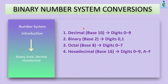Before we start, let me introduce you to the four number systems. First is decimal — its base is 10 and digits are from 0 to 9. Second is binary — its base is 2 and digits are 0 and 1. Third is octal — its base is 8 and digits are from 0 to 7. Fourth is hexadecimal — its base is 16 and digits are from 0 to 9, and after 9 we represent numbers with alphabets, so total digits are from 0 to 15.